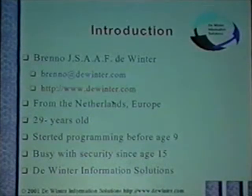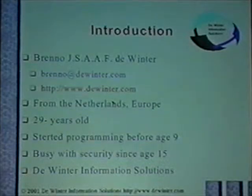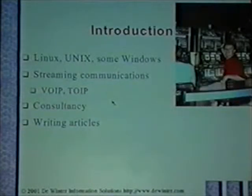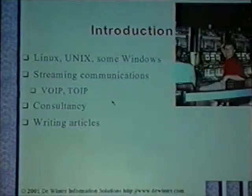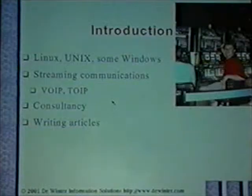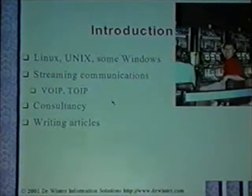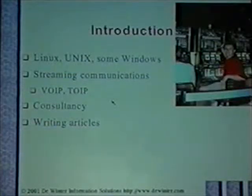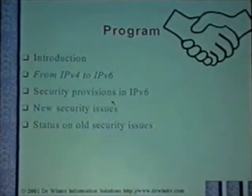I'm Brenno De Winter, I'm 29 years old. I started programming at something when I was eight years old. I was busy with security since I was 15, and I work for myself. I do a lot of Linux and Unix, and unfortunately sometimes you have to do Windows. I do a lot on telephony over the internet, voice over IP, and I write some articles, among them for Linux Journal. Okay, enough about me.